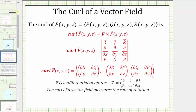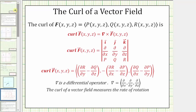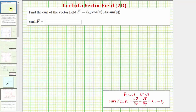Let's go back to our problem: determine the curl of the two-dimensional vector field, then evaluate it at two points in the given vector field and look at it graphically to determine what it tells us about the vector field at that location. Looking at our formula, p is equal to 2y cosine x, and q is equal to 4x sine y.